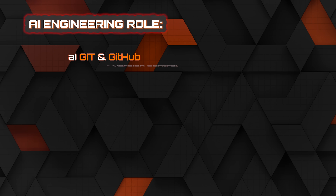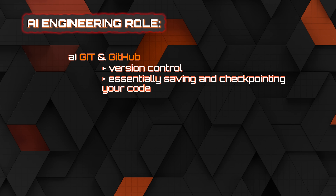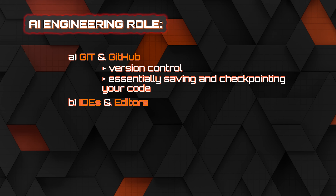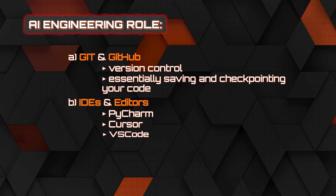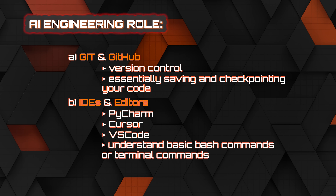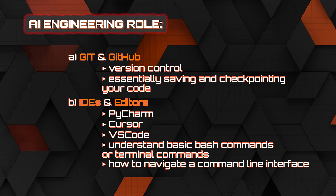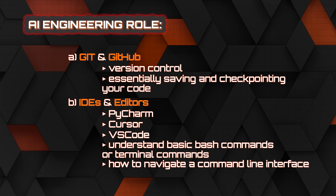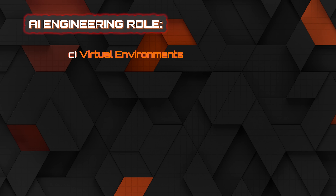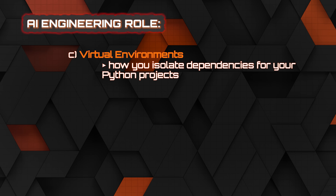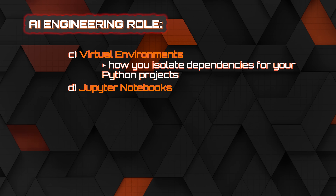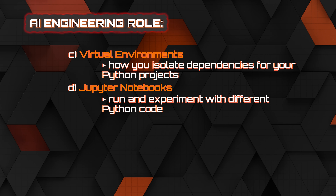Once you've built a strong foundation in Python, there's a whole list of tools you're going to need for an AI engineering role. First is Git and GitHub for version control — essentially saving and checkpointing your code. You'll need to use various IDEs or editors like PyCharm, Cursor, VS Code, etc. You'll need to understand basic bash or terminal commands to navigate a command line interface, understand virtual environments to isolate dependencies, and Jupyter notebooks to run experiments with Python code.